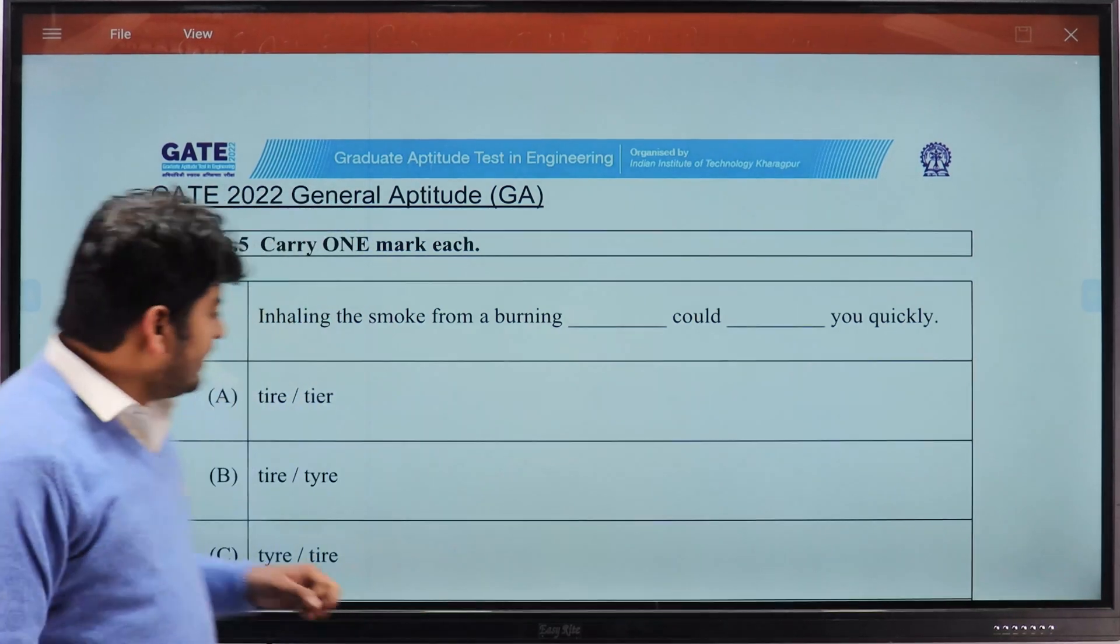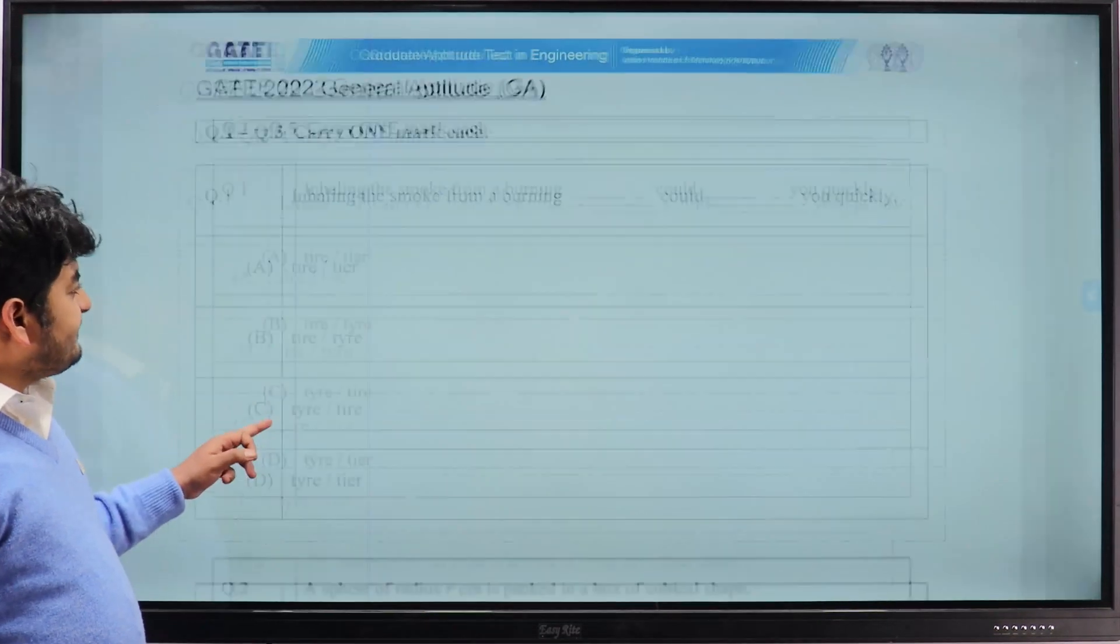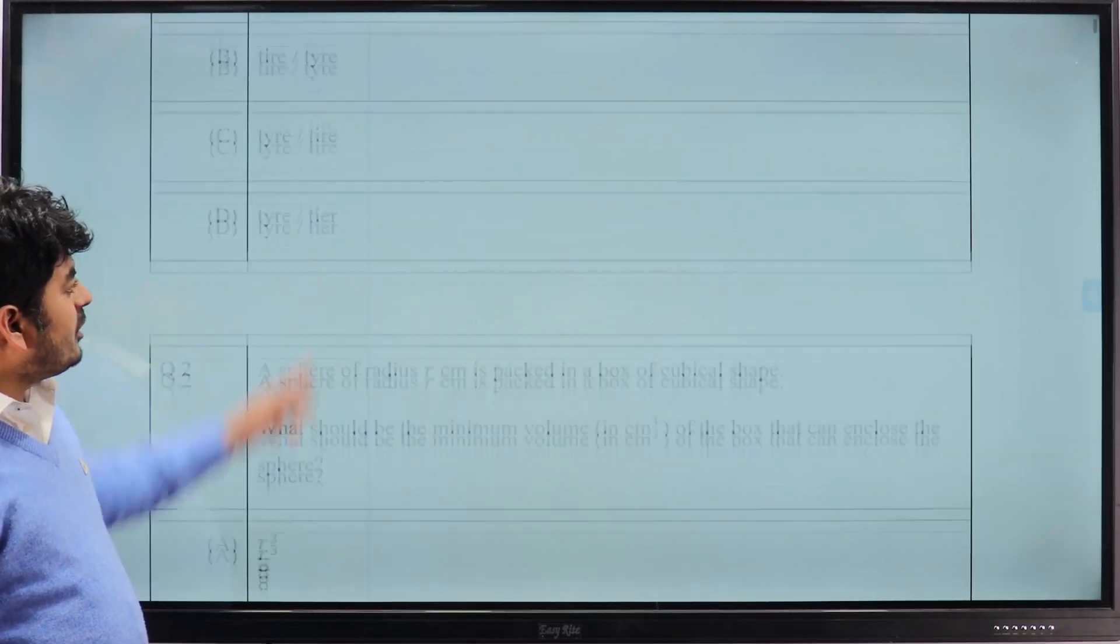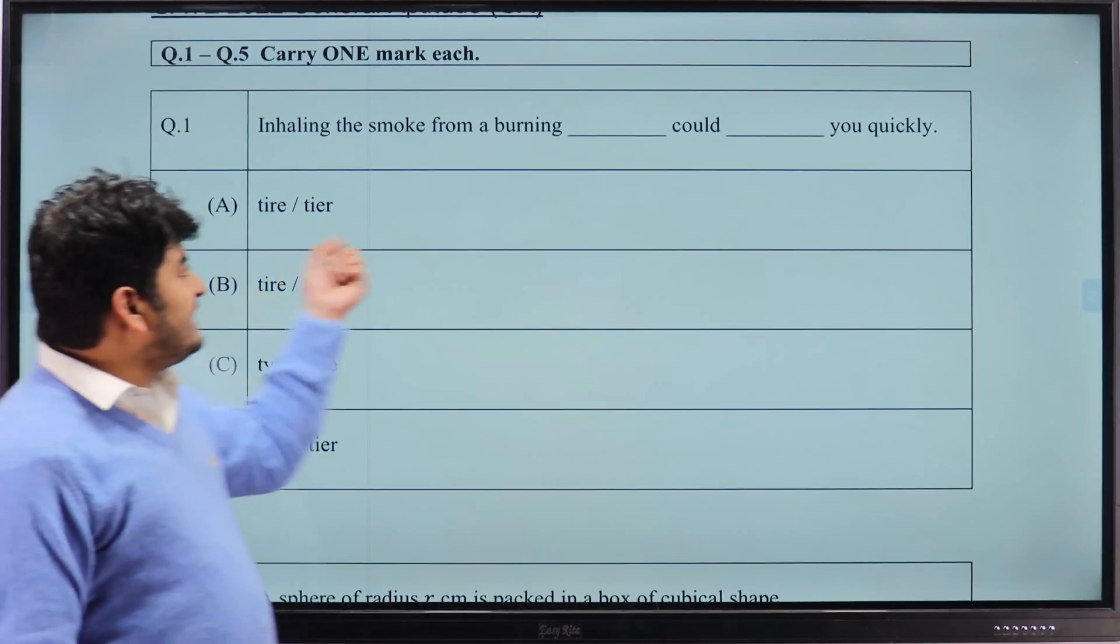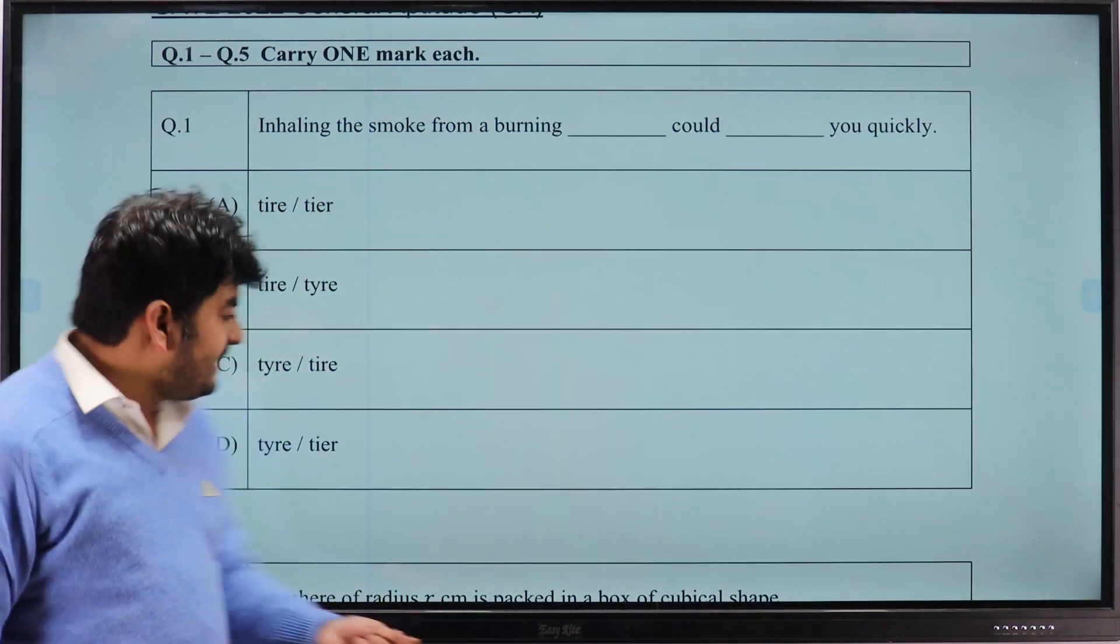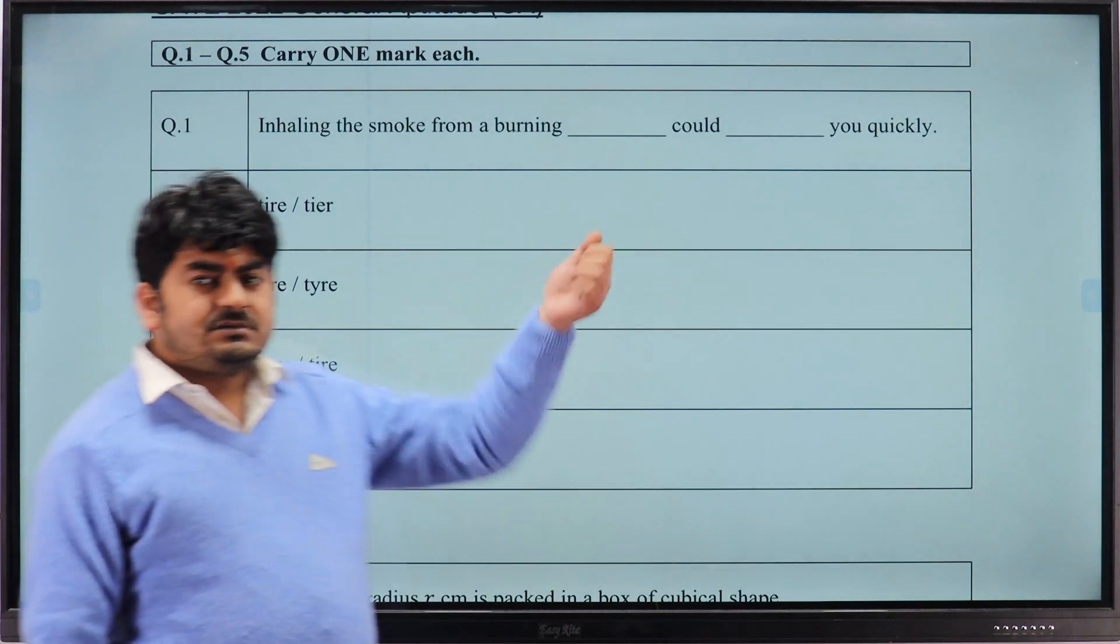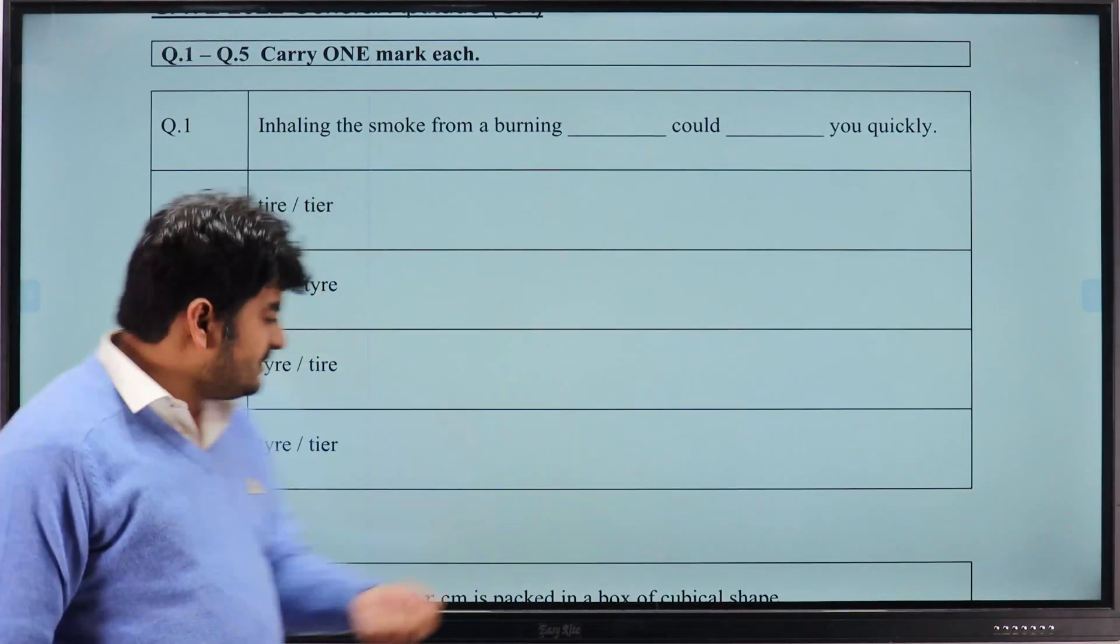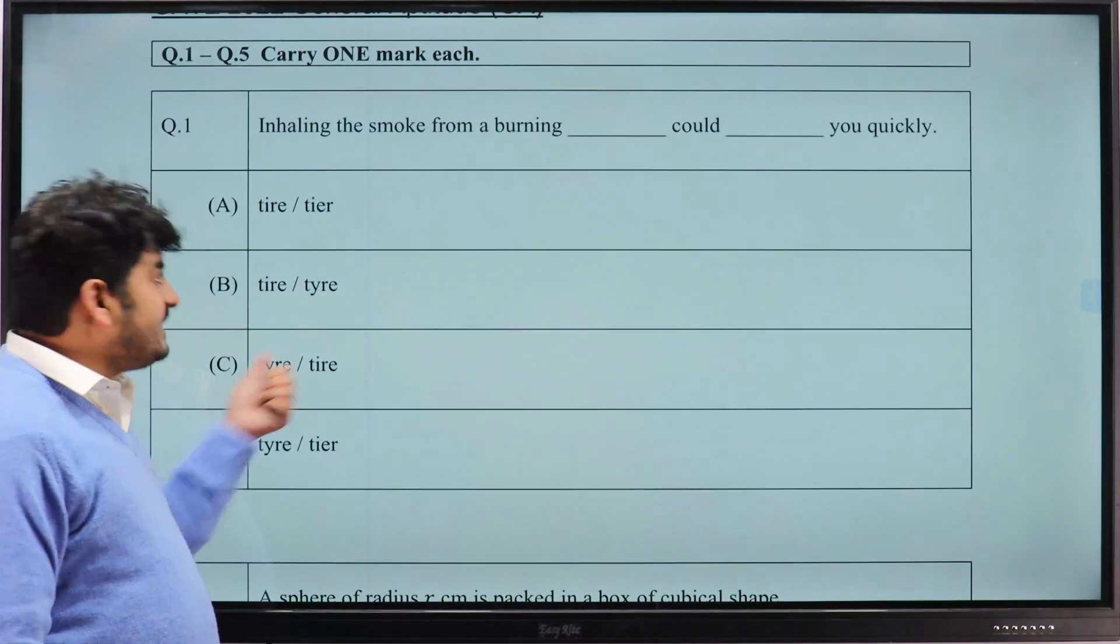For the first question, I hope all of you remember: inhaling the smoke from a burning rubber tire, that means T-Y-R-E, could tire you quickly, that is T-I-R-E. So option C is the correct answer.